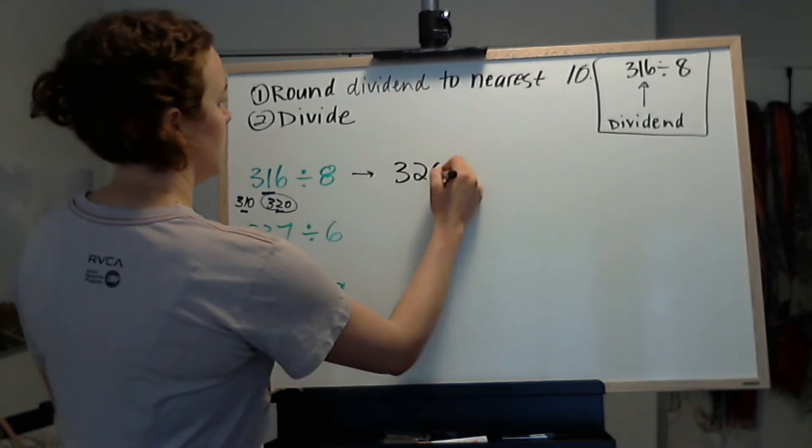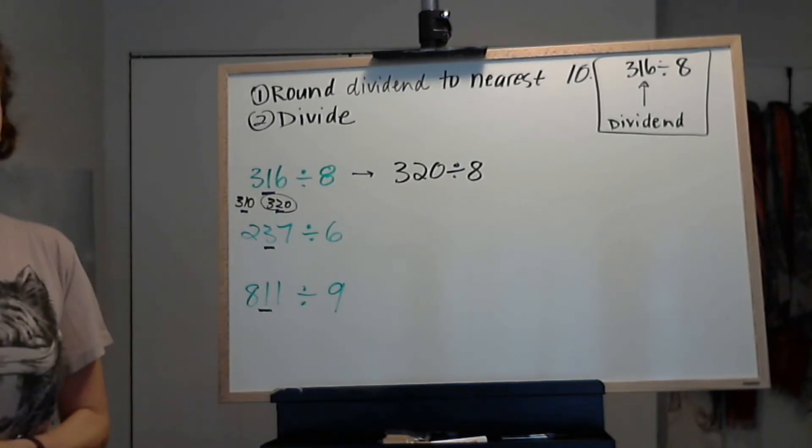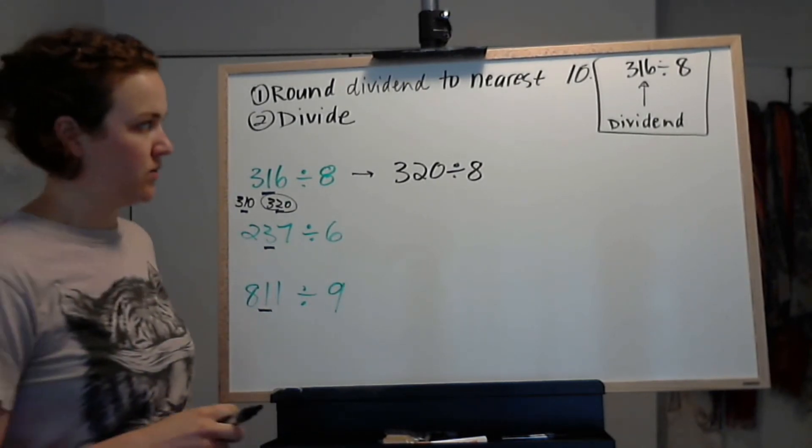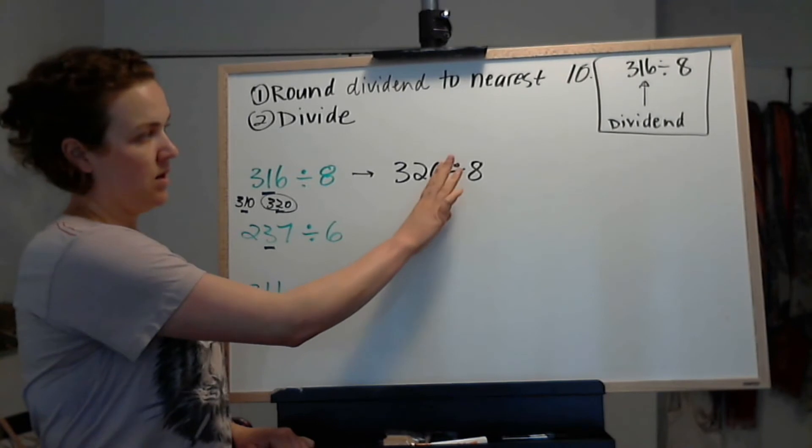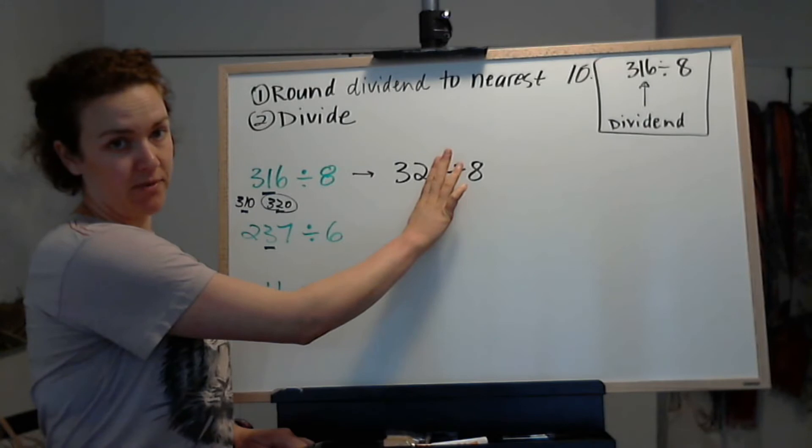So now we have 320 divided by 8. And here you can use our trick with the zero, so ignore the zero for now. Do 32 divided by 8, which is 4.